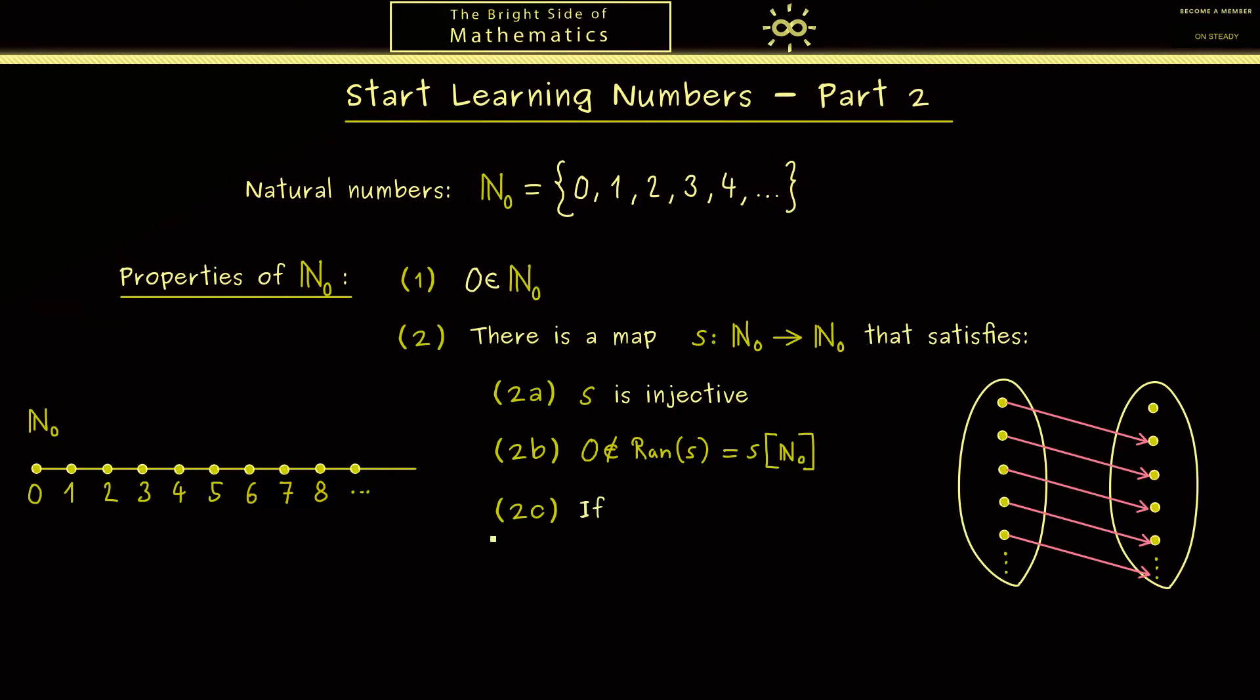And now the third property explains that N₀ is essentially the smallest possible infinite set. If M is any subset of the natural numbers that fulfills that 0 is an element in M and also that all successors lie in M again, then with the same picture in mind M would be an infinite set. Therefore it has to be N₀.